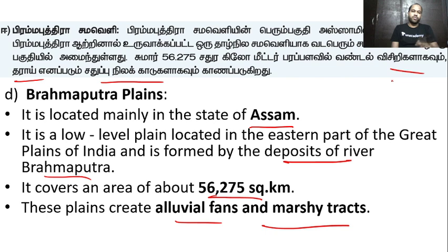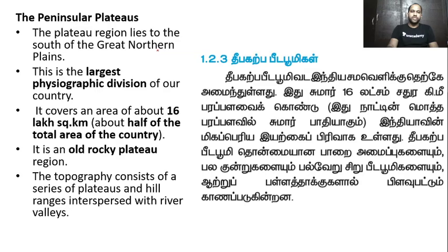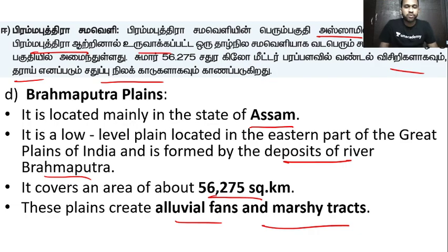The Brahmaputra Plains, with its left and right bank tributaries, is part of the Great Northern Plains. The Brahmaputra is the highest and most extensive river system in this eastern region.